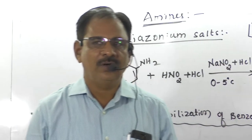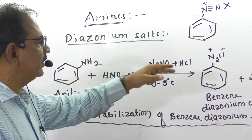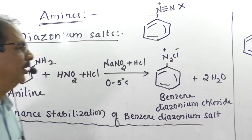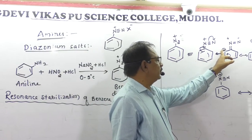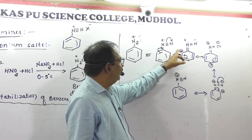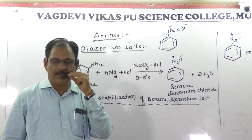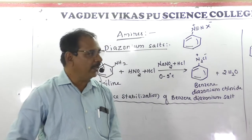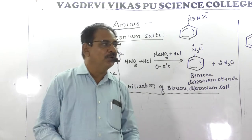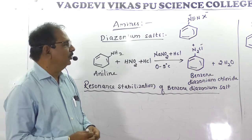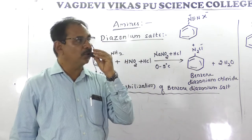According to the resonance structure, benzene diazonium salt is a meta-oriented compound. It undergoes nucleophilic substitution reaction because the benzene ring carries a positive charge, indicating electron-deficient carbon atoms. These electron-deficient carbons attract electron-rich species called nucleophiles, which are substituted onto the benzene diazonium salt.